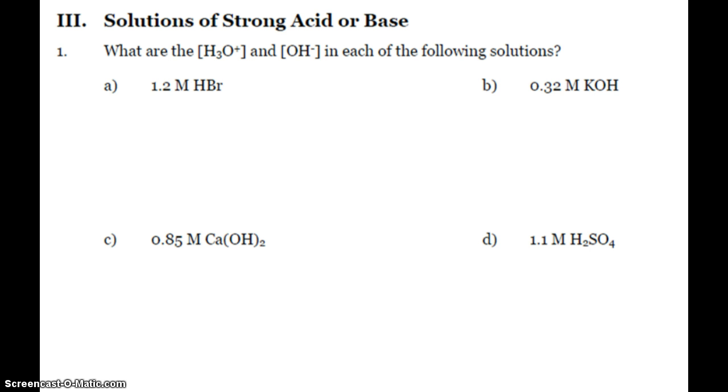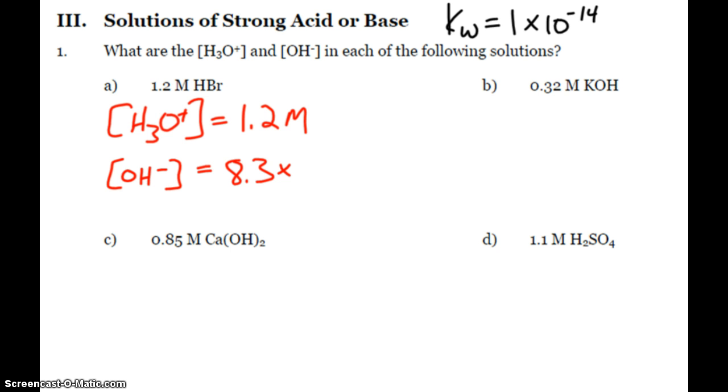Alright. So, solutions of strong acids or bases. What are our concentrations? Well, these are pretty easy when you're looking at... Here, I've got 1.2 molar HBr. Hydrobromic acid is one of our strong ones. So if that's the concentration of the solution, the concentration of my hydronium is 1.2 molar. In order to find my hydroxide, I have to remember the great and powerful ion product constant of water is equal to 1 times 10 to the negative 14. And that is hydronium times hydroxide.